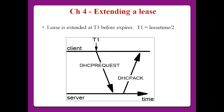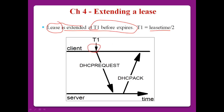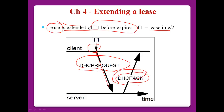Extending a lease: DHCP uses lease times, so the lease can be extended at T1 before it expires. T1 means the lease time divided by 2. When the client reaches T1, it will send a DHCP Request to the server. Then the DHCP server replies to the client with a DHCP ACK packet, and the DHCP client can extend its network settings.